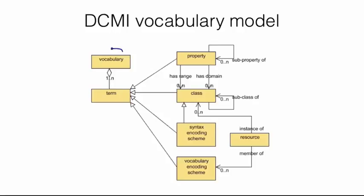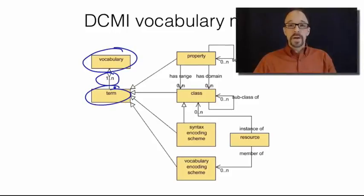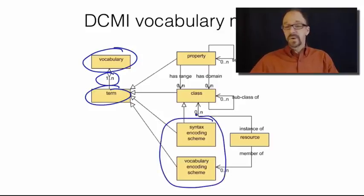A vocabulary is made up of one or more terms. A controlled vocabulary, or even an uncontrolled vocabulary, like any language, is a set of terms. Each term is encoded in either a syntax or a vocabulary encoding scheme, some way in which those terms are defined.